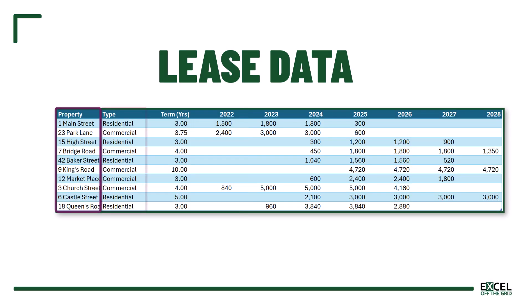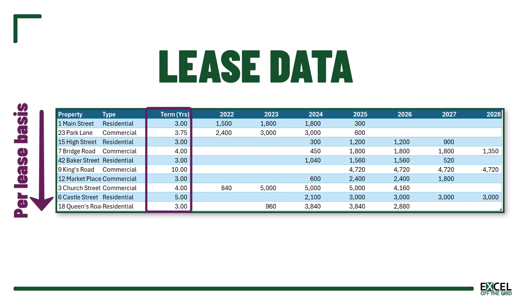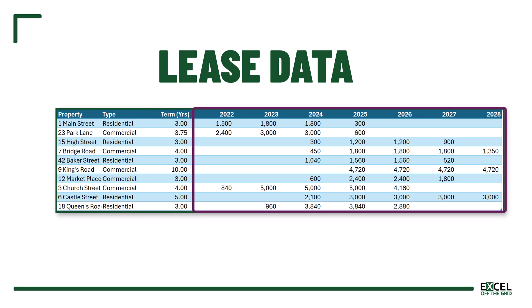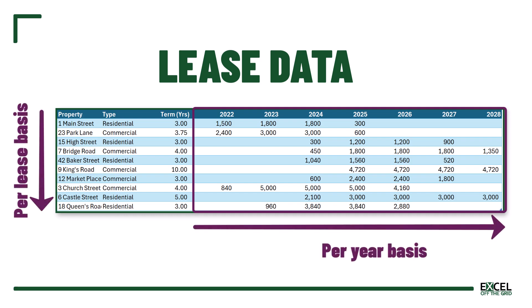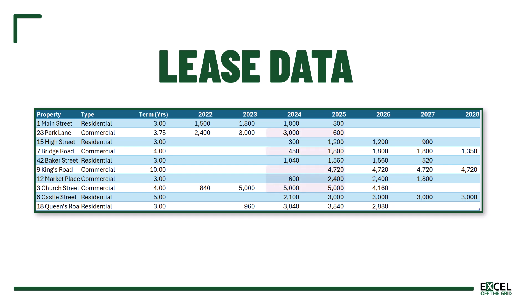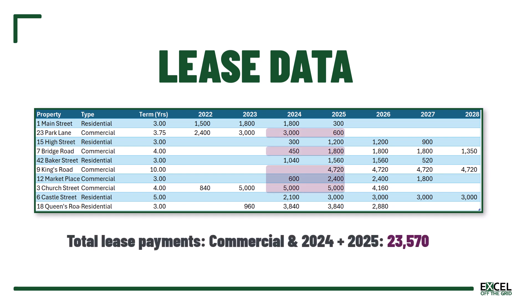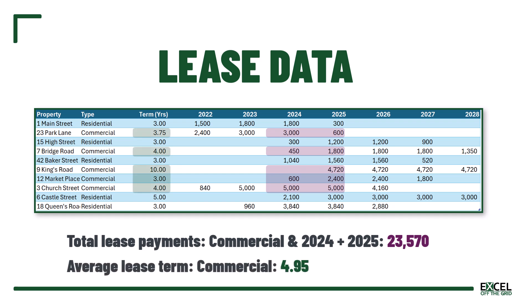The data we're working with is lease data. We have the property name, then whether it's residential or commercial, then the lease term on a per-lease basis, and then the lease payments per year — which is on a different level of granularity because it's per lease and also per year. It's these two different levels of granularity that will cause us our biggest issues. For all our data layouts we want to calculate the lease payments for 2024 and 2025, and the average lease term — both only for the commercial lease types.